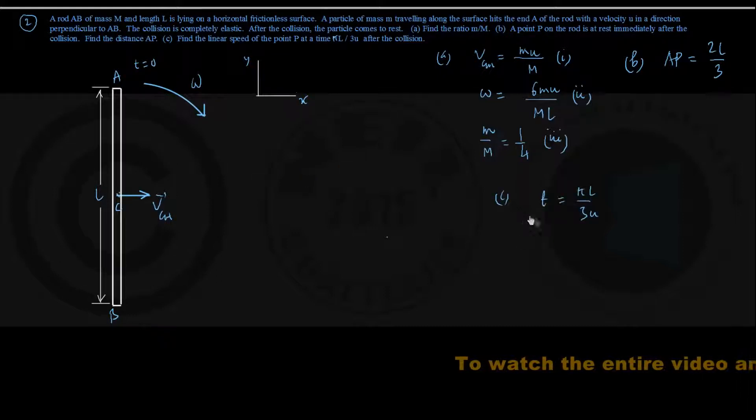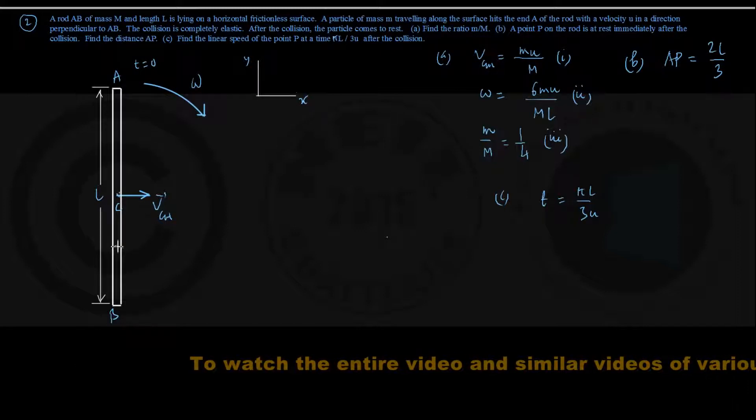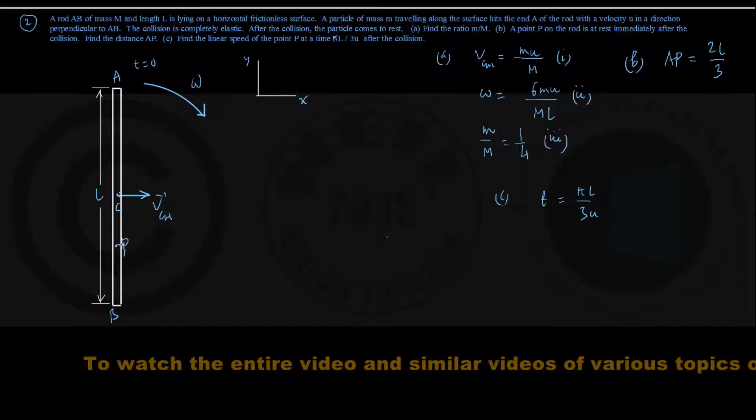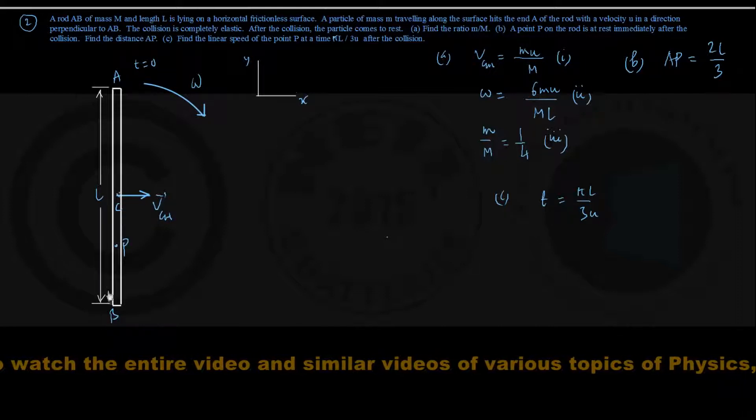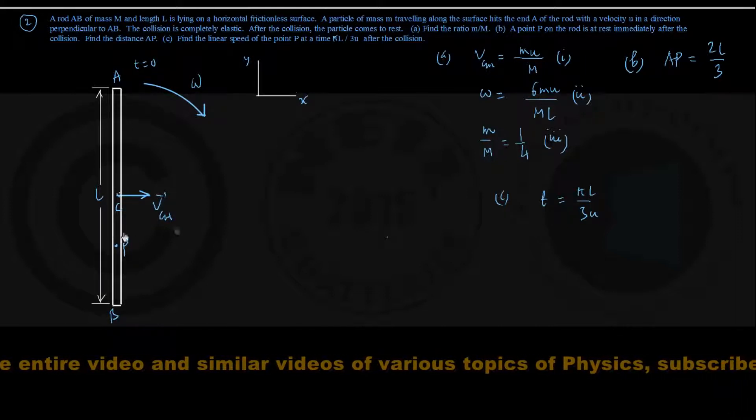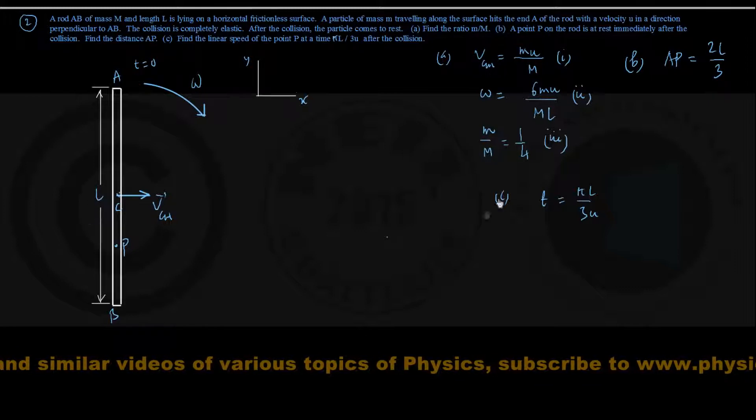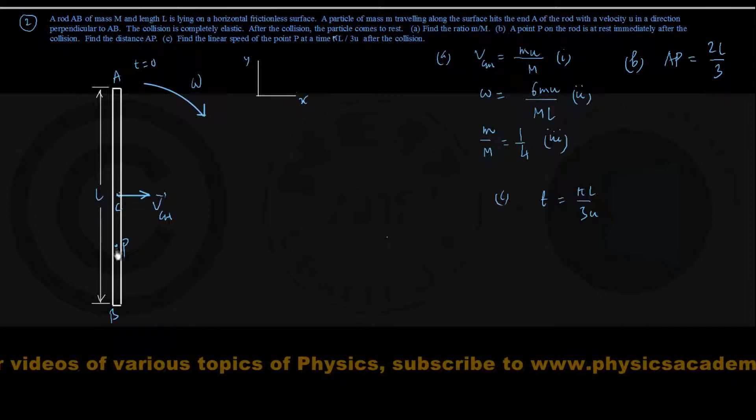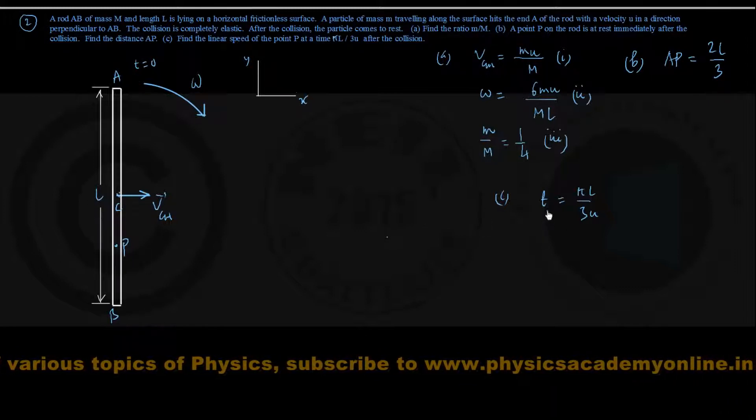I am writing here for convenience and also note in the figure that the point P in question that we just found in part B of the problem is placed somewhere between C and B so that the length AP is coming out to be two-thirds the length of the rod. Now we have to find out linear speed of this particle P at this time.